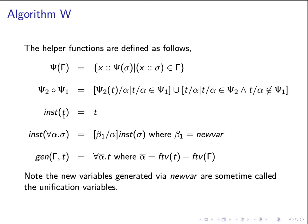The inst function has two parts. The first part deals with a simple type — we just return the type itself. The second part says that if the input is a type scheme, it uses a new-var function to generate a new variable that doesn't exist anywhere before, and we replace alpha with this new variable beta_1. We then further instantiate the body of the type scheme using the inst rule recursively.